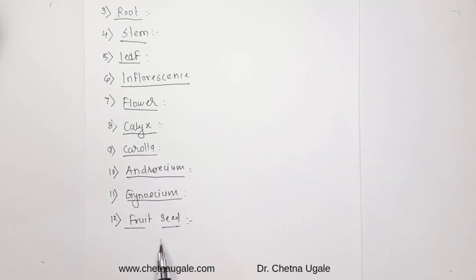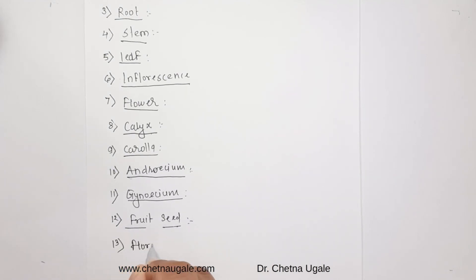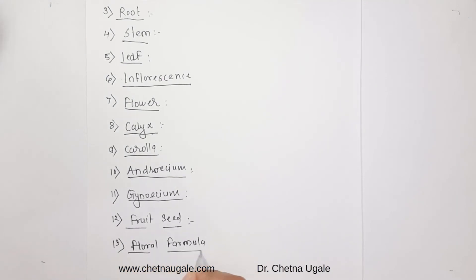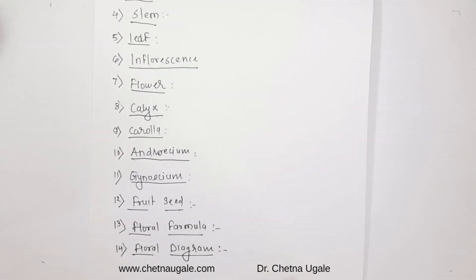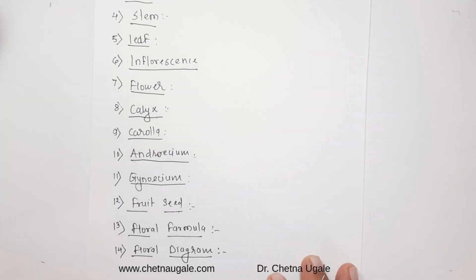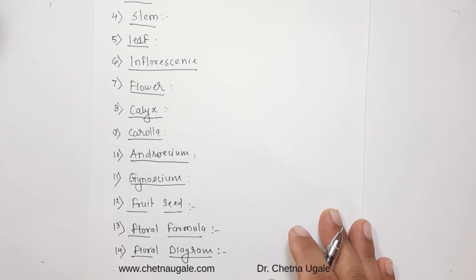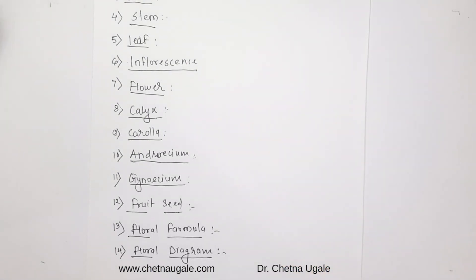These are the terminologies used while describing the flowering plant. After these, we mention the floral formula, which we have already discussed, and the floral diagram. The floral diagram is a description of the flower represented by different symbols and sizes. These are the terminologies to be used in sequence while describing the morphology of a flowering plant.